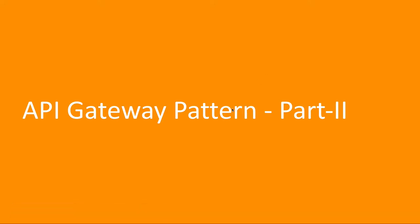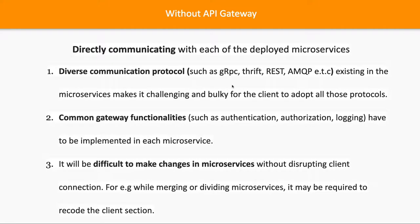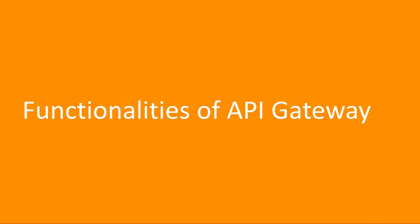Welcome to part two of the API Gateway pattern. We'll talk more about why we need API Gateway and what functionalities it provides. We already covered the common challenges when not using API Gateway — authentication, authorization, and logging need to be implemented in each service, causing duplication. Also, it's difficult to make changes to a microservice when a session is active, as that would disrupt the user session.